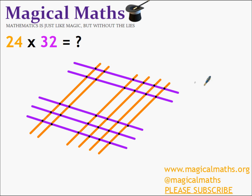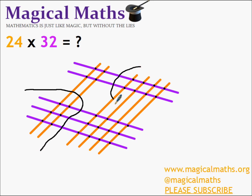What we must do now is group together the intersection points. It's very important that we do this carefully. So we've got a group here, and we've got a group here, and then we've got the middle intersection points.